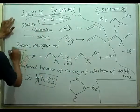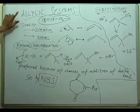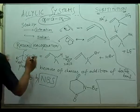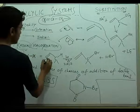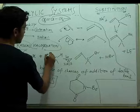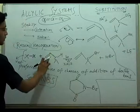Now one important reaction of allylic systems is radical halogenation. In this, one X2 molecule, that is halogen molecule, acts upon the allylic system but not on the double bond.